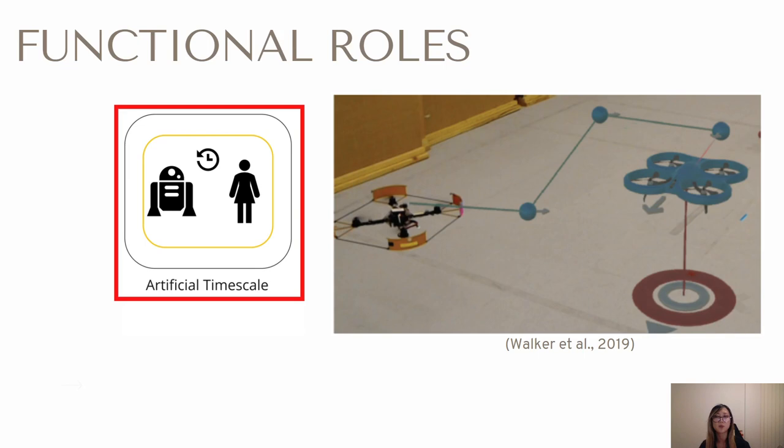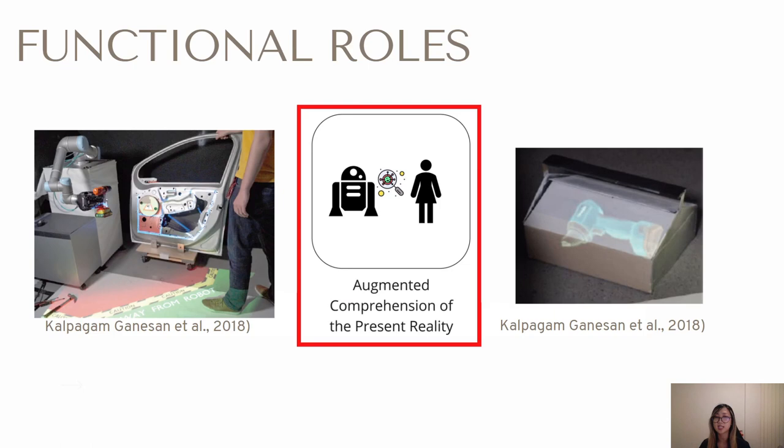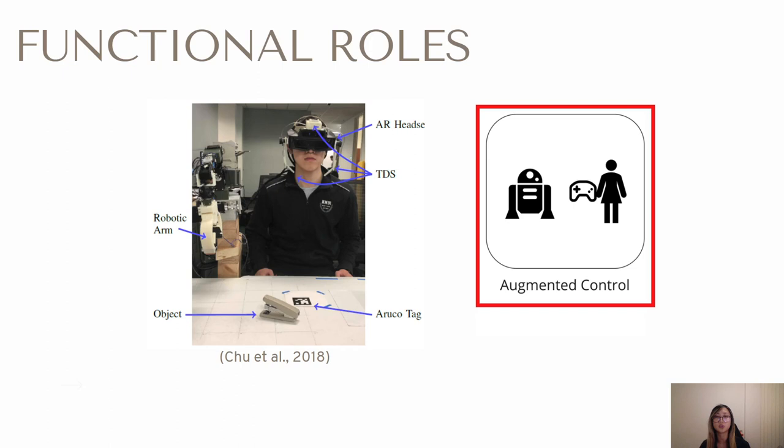Next is augmented comprehension of the present reality. In contrast to the artificial timescale, in this functionality AR is used to augment the understanding of the present reality. As an example, in a human-robot collaborative card or assembly task, AR has been used to visualize to the human the objects hidden inside a toolbox. Our last category is augmented control, where AR is used to provide robot control to the user. For instance, users were able to control the robot by using tongue movements to select options in an AR menu.